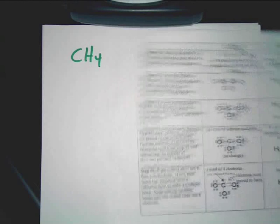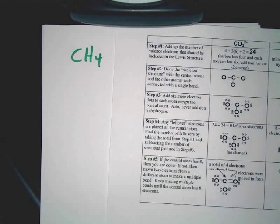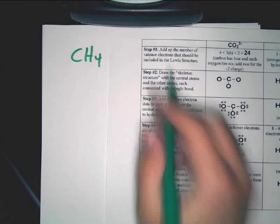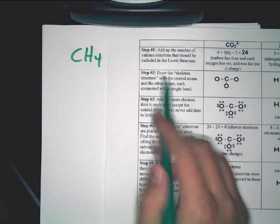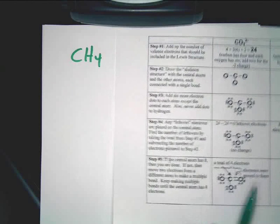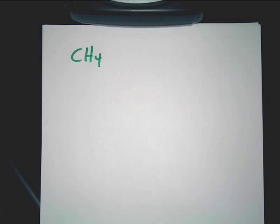There are five steps to follow. Again, I really hope that down the road you don't need to reference this chart. That's my hope. Now to do this, first, it says step one: add up the number of valence electrons that should be included in the Lewis structure. That's relatively simple. You've got to think back to when we were talking about Lewis dot diagrams and valence number.